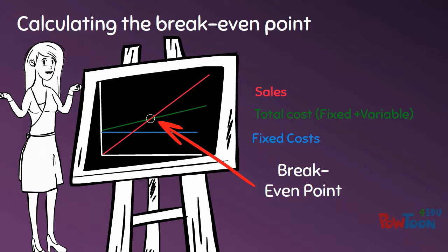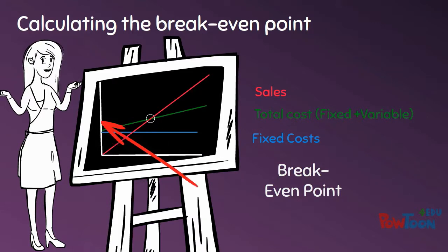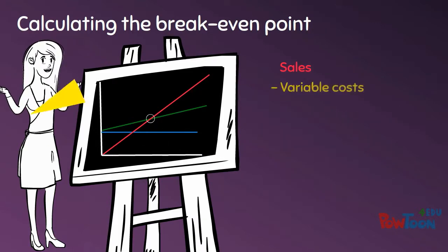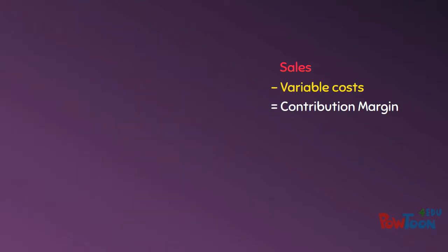Our breakeven point occurs when our sales revenue is equal to our total cost. In order to find the breakeven point, first we need to analyze the difference between our sales and our variable costs, which is our contribution margin.